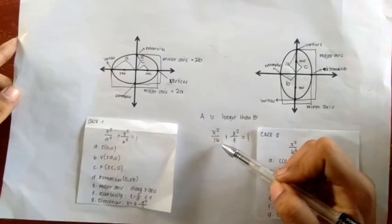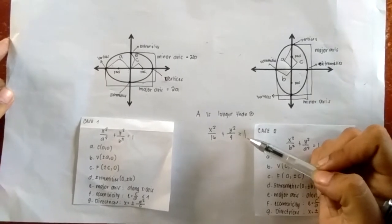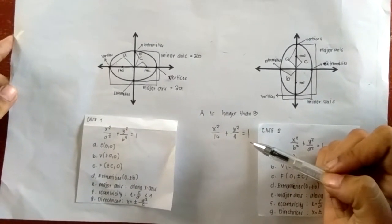Consider this example: x² over 16 plus y² over 4 equals 1. Could that be elongated horizontally or vertically?